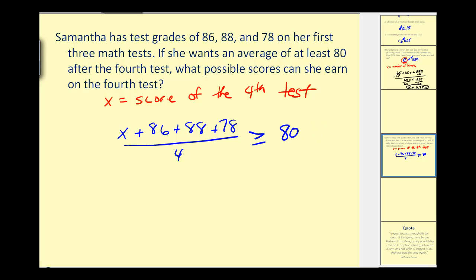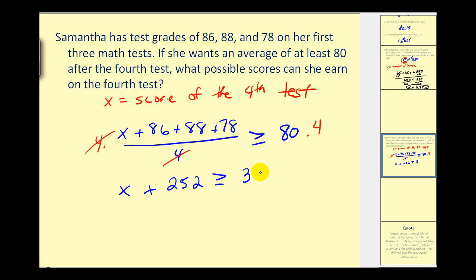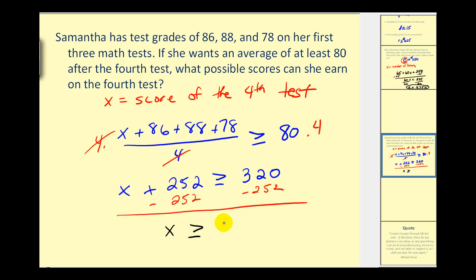Now if we solve this for X, the first thing we do is multiply both sides by 4. That gives us X plus 252 greater than or equal to 320. Subtracting 252, we get X has to be greater than or equal to 68. So if that fourth test score is greater than or equal to 68, she will have an average of at least 80, which will give her at least a B.